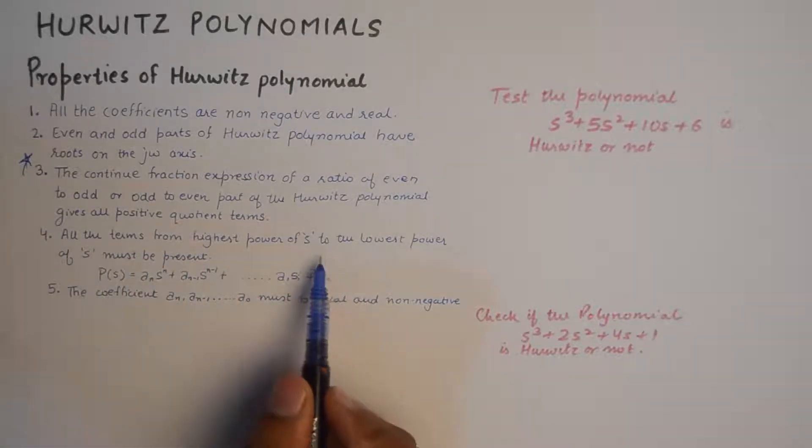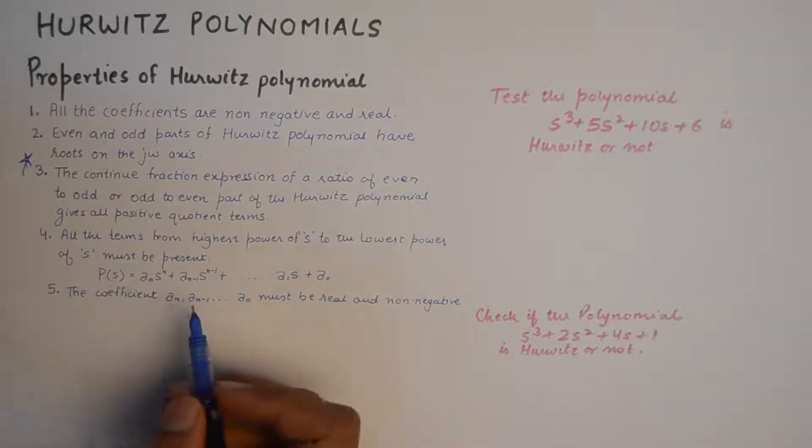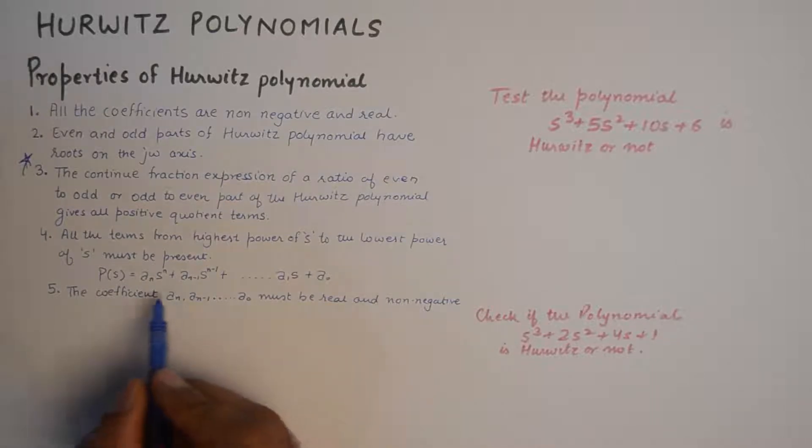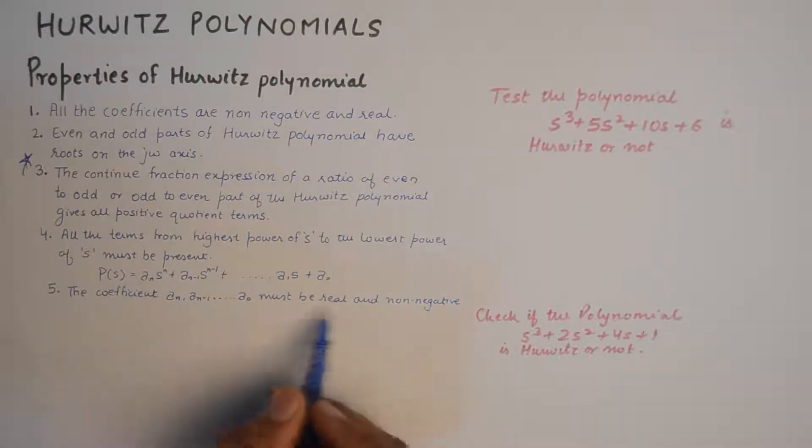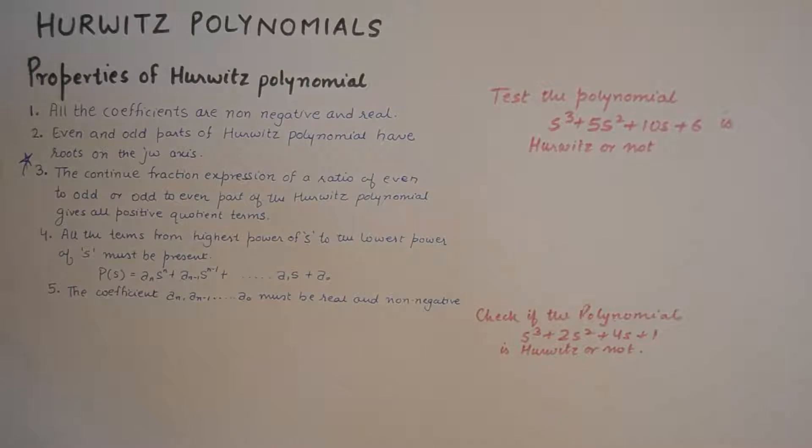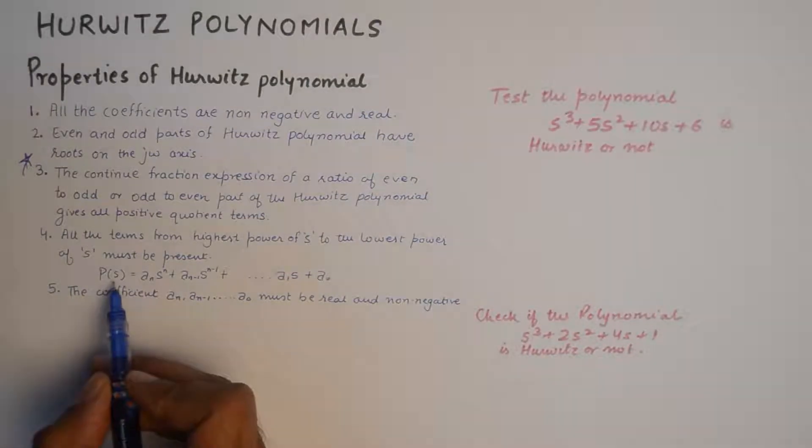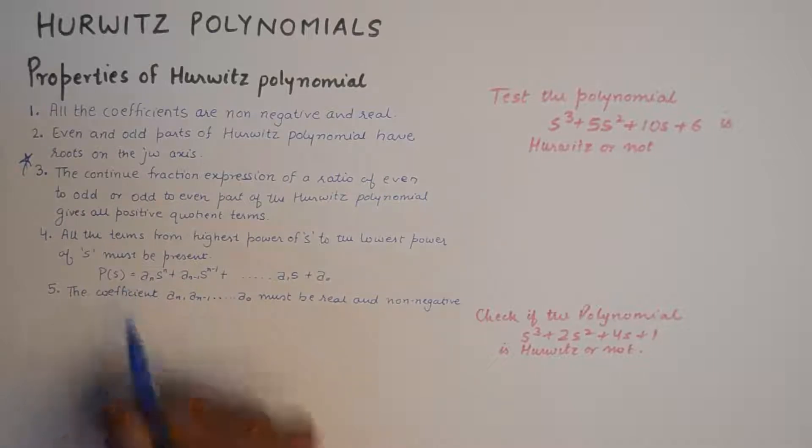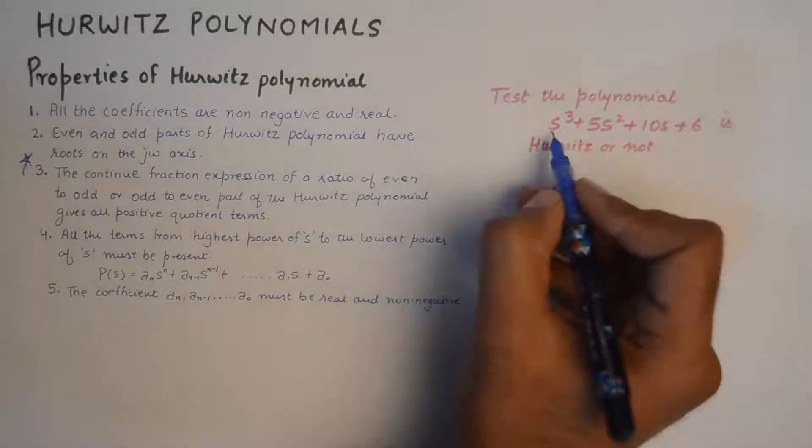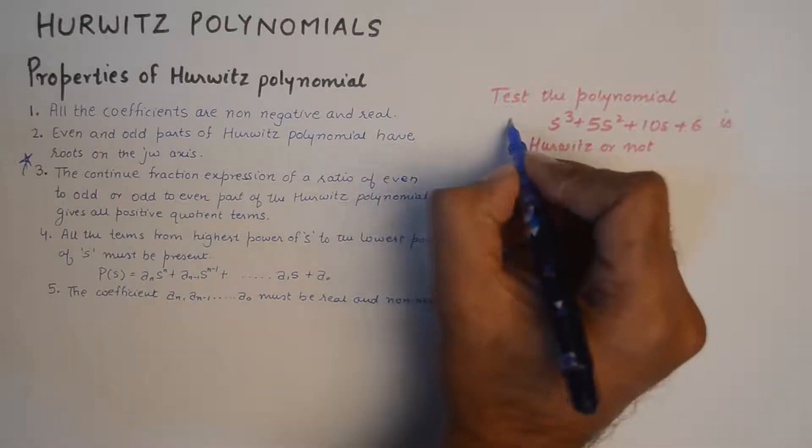And finally, all the terms from highest power of s to the lowest power of s must be present, and the coefficients they all must be real and non-negative. Now you'll get a polynomial which will have a form something like this.